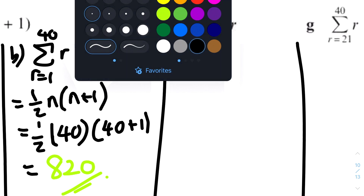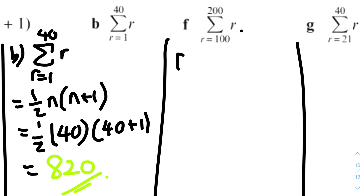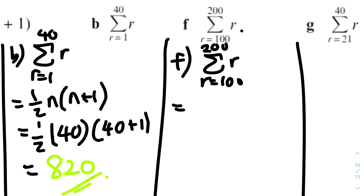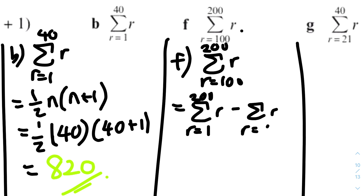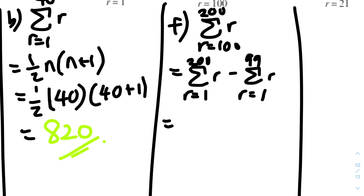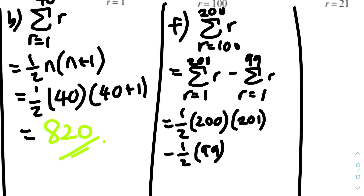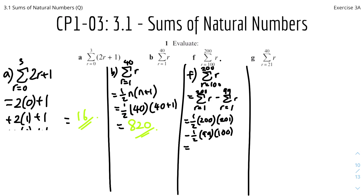Part c: find the sum of r from r equals 100 to r equals 200. Since the lower limit is not one, we split into two sums: the sum of r from r equals one to 200, minus the sum of r from r equals one to 99. So it'll be half times 200 times 201, minus half times 99 times 100, and that gets us 15,150.